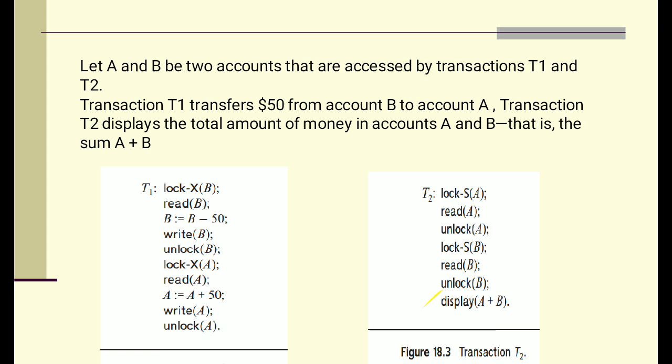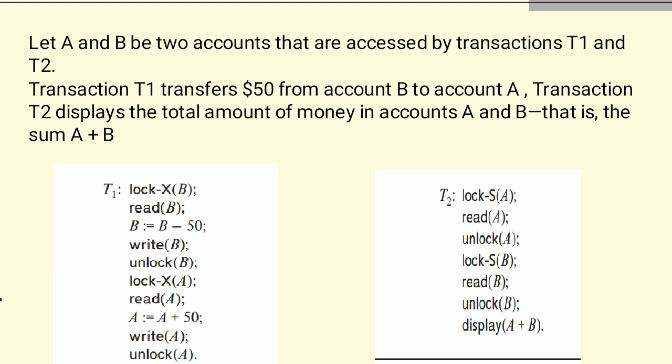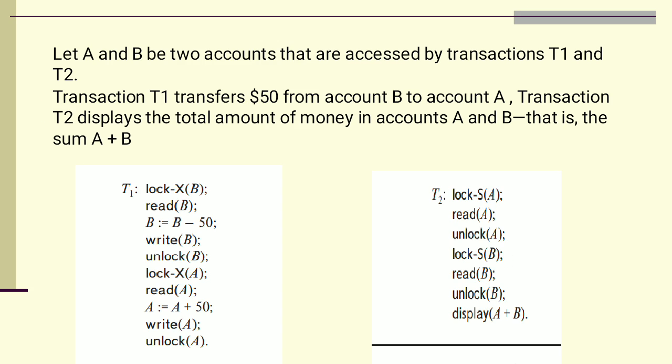In T2 transaction, account A is locked in shared mode. Then we have to read the value in account A, then unlock A. Similarly, lock S(B), read B, unlock B. And finally, we are going to display the addition of A and B. This is how different modes of lock work.